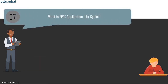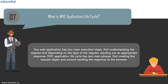The next question is: what is the MVC application life cycle? Any web application has two main execution steps — understanding the request and sending an appropriate response. The MVC application life cycle has two main phases: creating the request object and sending the response to the browser. Creating the request object includes four steps: fill the route, fetch the route, create the request context, and create the controller instance. After this, the response is sent back.